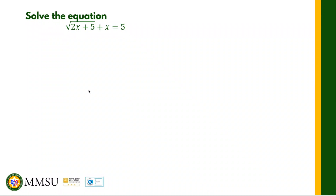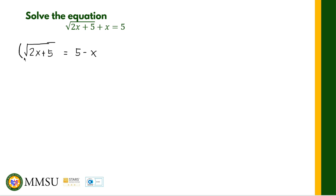We are given: square root of (2x + 5) plus x equals 5. We are asked to solve for the equation. To solve, we isolate the expression involving the square root on one side of the equation. The square root of (2x + 5) will be isolated on the left side, and all other terms are transposed to the right, so this becomes 5 minus x. Our goal is to eliminate the square root.